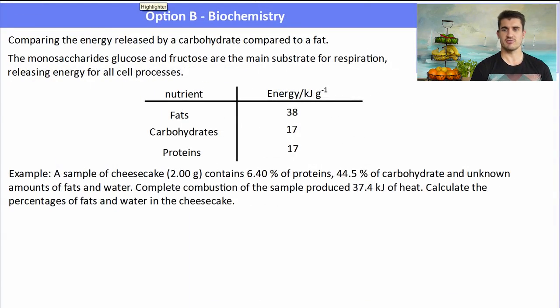All right, we also need to compare the energy released by a carbohydrate compared to a fat and a protein. So a fat will release 38 kilojoules per gram. A carbohydrate 17 kilojoules per gram. And a protein 17 kilojoules per gram. We say fats are more reduced. That's why they produce more energy when they undergo combustion.